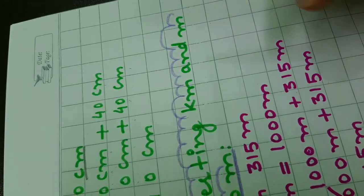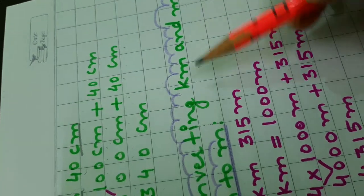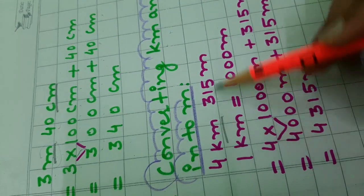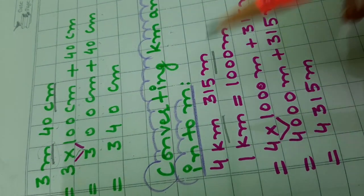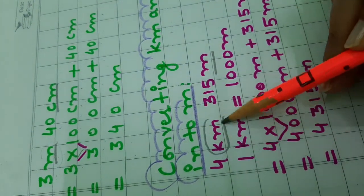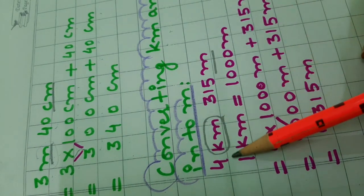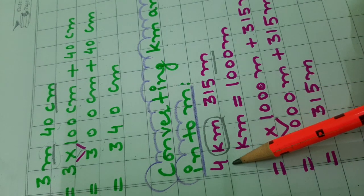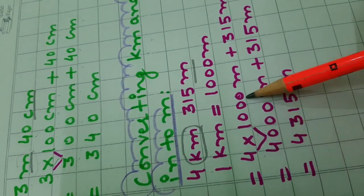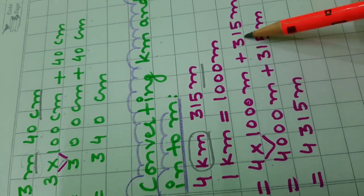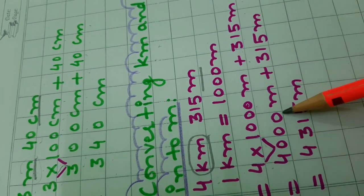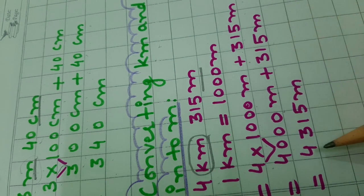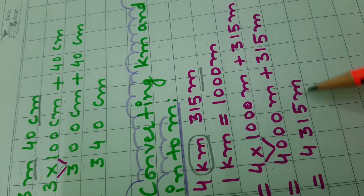The next one is how to convert kilometer and meter into meters when both kilometer and meter are given together. Again, we convert the bigger unit into the smaller unit first. To convert 4 kilometers into meters, we multiply 4 by 1000 and then add 315 to it. So, 4000 meters plus 315 meters gives the answer 4315 meters.